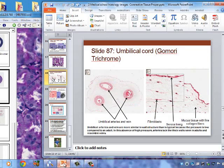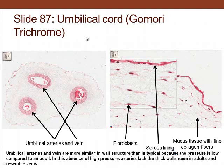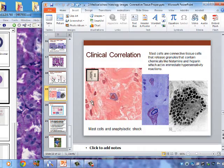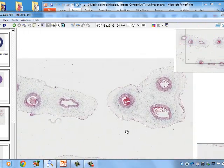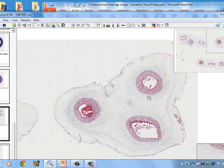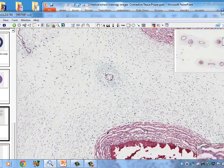Another type of connective tissue is found in the umbilical cord — mucous connective tissue. It has very fine fibers and fibroblasts to support the cord. The umbilical cord contains two arteries and a vein, which we'll see in the next slide.